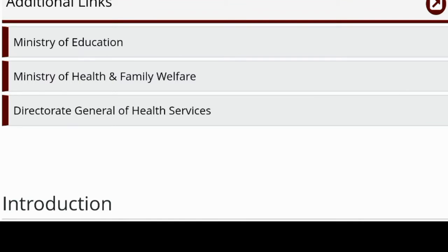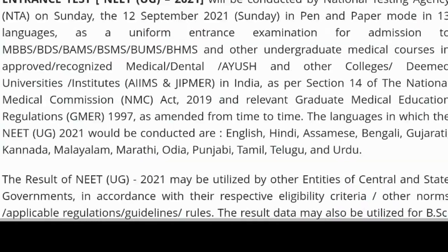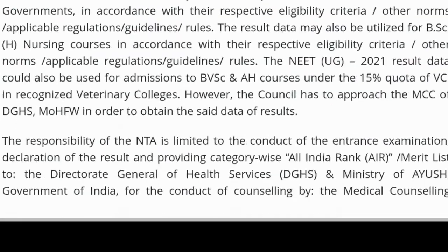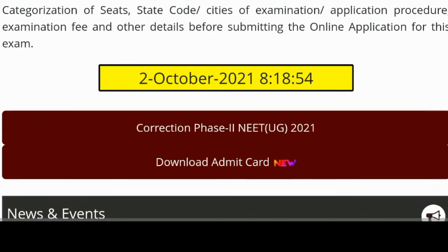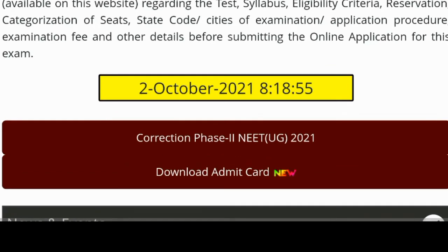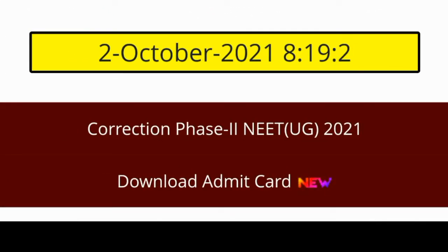You need to enter whatever type. If you scroll down the link to the next section, you will find the link at the back. This is the correction phase for NEET UGC 2021.